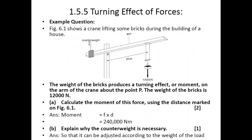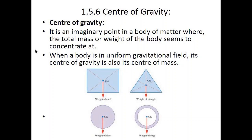Section 1.5.6 — center of gravity. It is an imaginary point in a body of matter where the total gravitational force tends to act the most. When a body is in a uniform gravitational field, the center of gravity and the center of mass are the same, so no matter which term the examiner uses, you know what it means. For regular objects such as a cube, cuboid, prism, or circle, the center of the object is usually the center of gravity and center of mass.